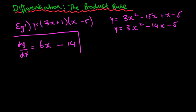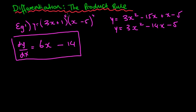That's a fairly easy way to do that, and if you get a question like that it's probably a smart way of doing it. But you're going to get much more challenging questions where you might have things like powers of 5 or 4, which is going to create a lot of problems. So we're going to look at a rule called the product rule that will enable us to do this a lot quicker.